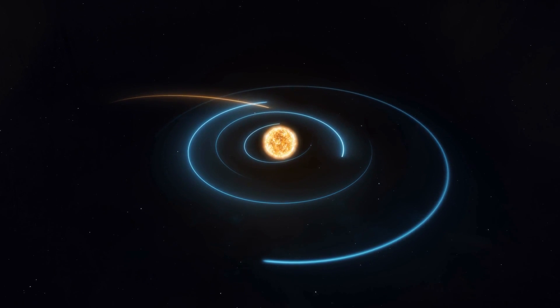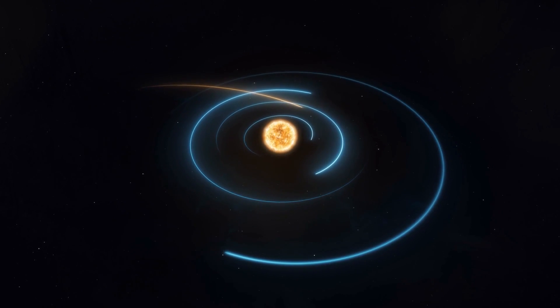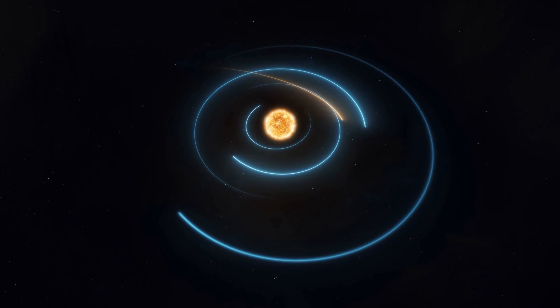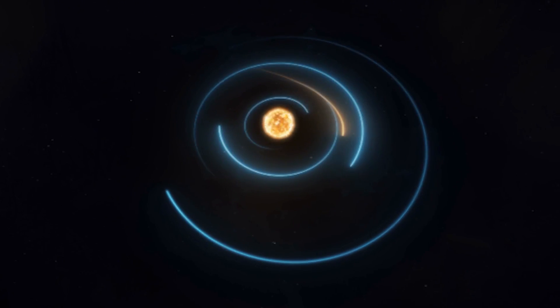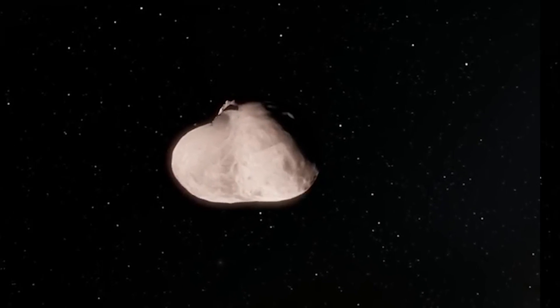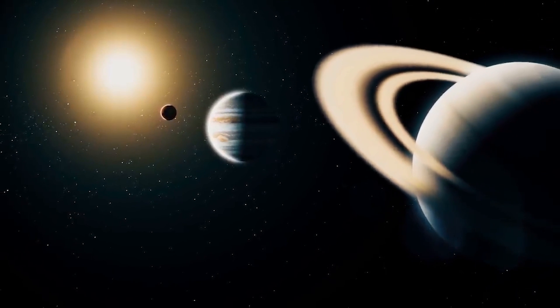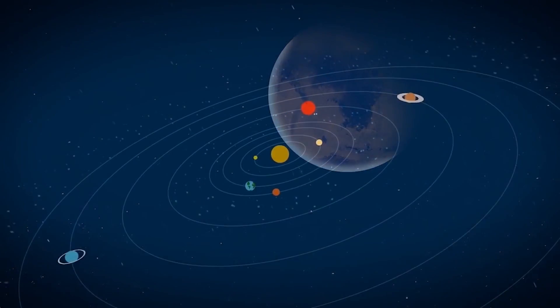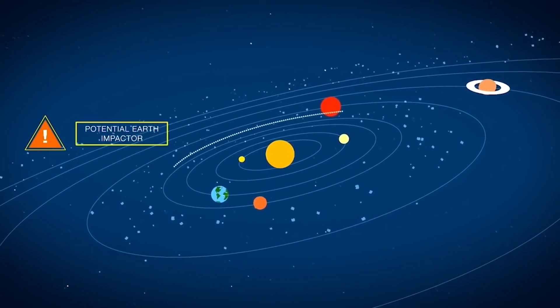Like all other asteroids, Apophis is a remnant of the formation process from our own solar system, which happened over 4.5 billion years ago. Apophis must have gotten separated millions of years ago from the main asteroid belt, which is located between Mars and Jupiter. And the gravitational force of a planet as large as Jupiter might probably have been responsible for the asteroid's separation from its main belt.